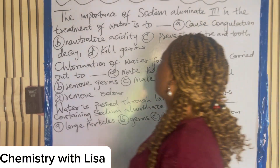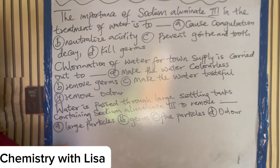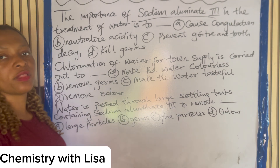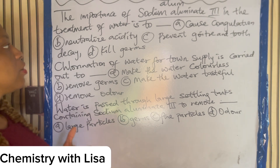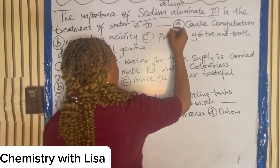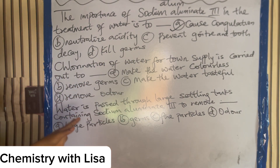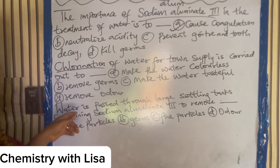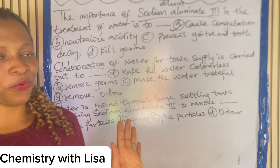The importance of sodium aluminate in the treatment of water is to what? Options: coagulates fine particles, neutralizes acidity, prevents goiter and tooth decay, or kills germs. Sodium aluminate is an alum, and alum is used in coagulation — to coagulate fine particles in the treatment of water. So the answer is A. Also: chlorination of water for town supply is carried out to kill germs.